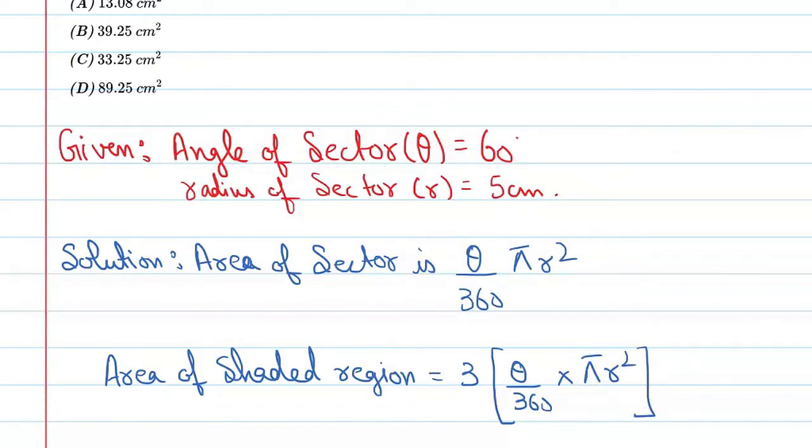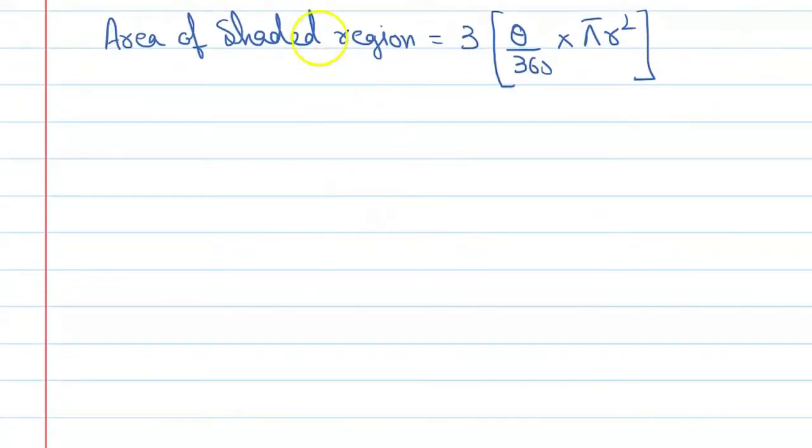Let's put the values and find out the answer. So it is 3 into 60 upon 360 into pi into 5 squared. Canceling it, it is 6. 3 cancels to give 2 and this is 1 upon 2 into 22 upon 7 into 25. So canceling it, it is 11.